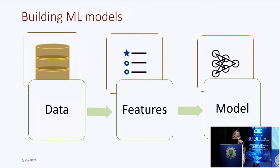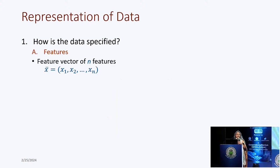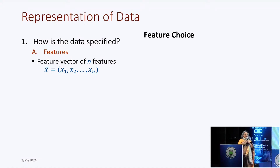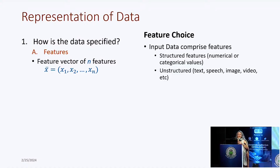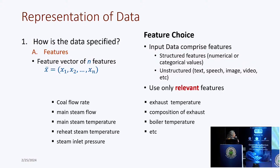In a basic machine learning model flow, you have data, and given a task at hand, you identify features which are relevant for that task. You extract features or identify features from experts, and build models on those features. The feature choice may initially depend on the understanding of experts in that domain. Features can be structured as well as unstructured.